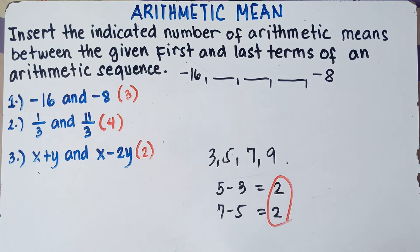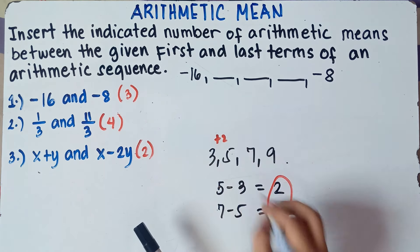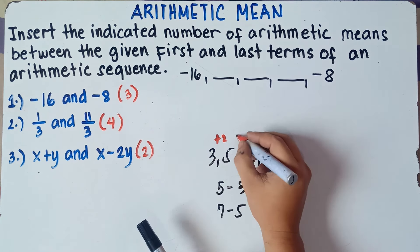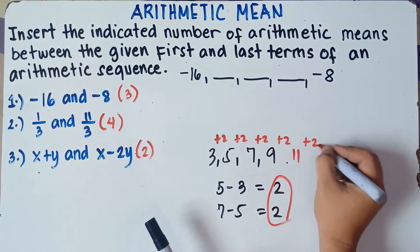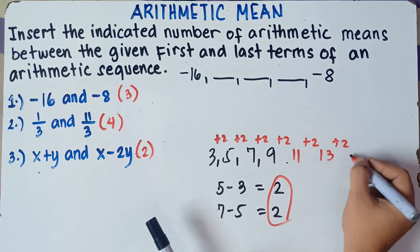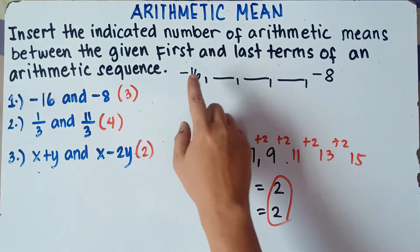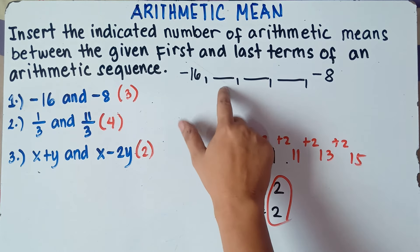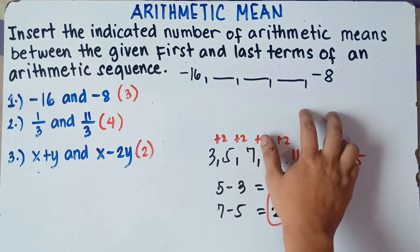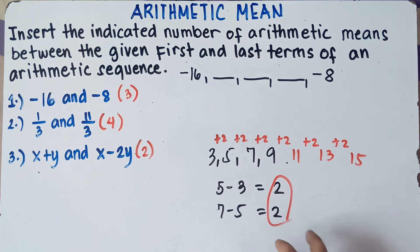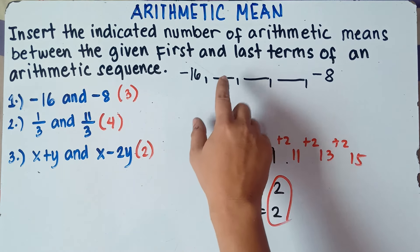Once you get the common difference, you can work in reverse — adding the first term by the common difference. The common difference is 2, so 3 plus 2 is 5, 5 plus 2 is 7, 7 plus 2 is 9, 9 plus 2 is 11, and so on. So once you get the common difference, we can add negative 16 by the common difference to get the second term.